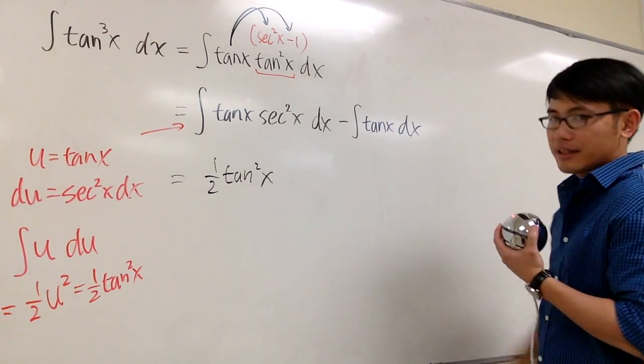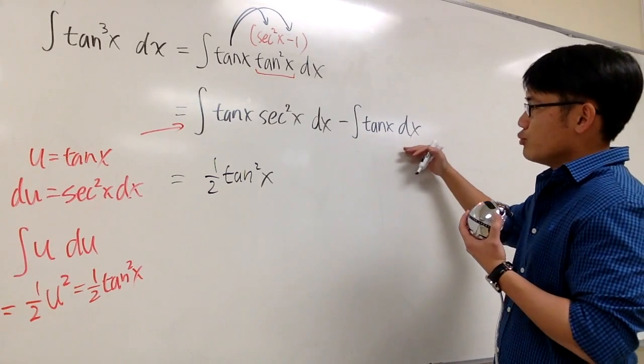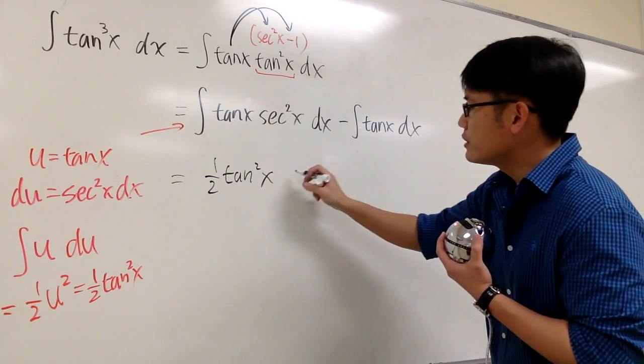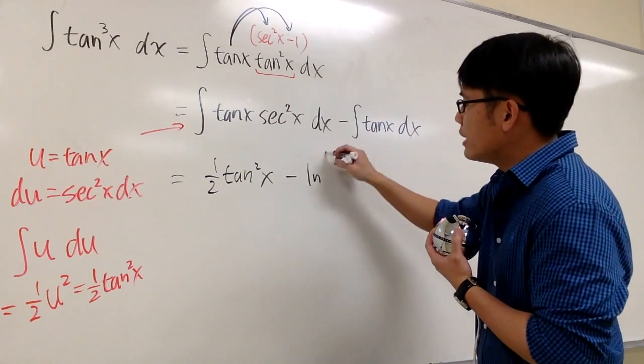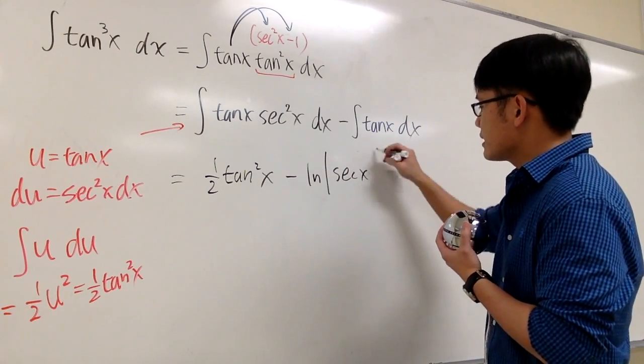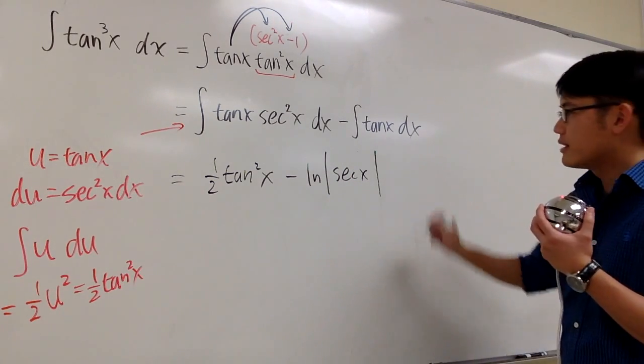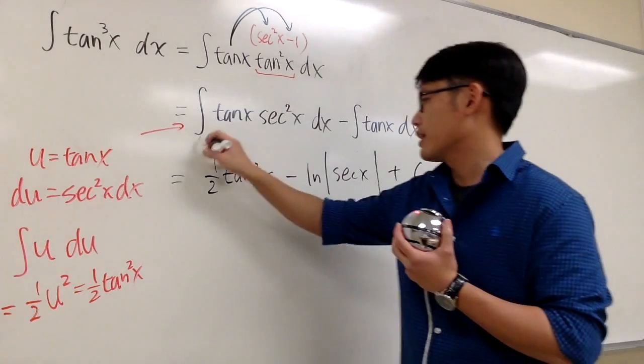How about the second? This is something that you should remember, so let me just put on the minus first. And then the integral of tangent x is ln absolute value of secant x. And then we are done. Plus c.